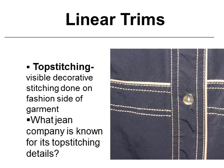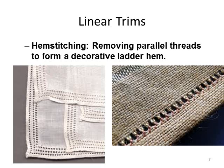Hem stitching is when you take a couple of strands of parallel yarns completely out of the weave, then take the weft yarns and wrap little strings around them to create a decorative ladder effect. In this picture, the rows going up and down have been removed, and in red you can see the horizontal ones have been wrapped around to create that ladder effect.